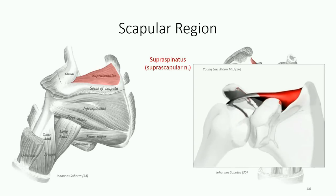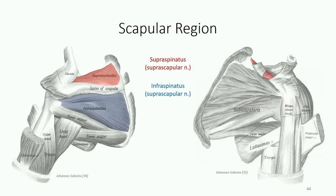Inferior to the spine of the scapula is the infraspinatus muscle. This muscle also inserts on the greater tubercle, but because it passes posterior to the joint capsule, it is considered a true external rotator of the shoulder. The third muscle of the rotator cuff is teres minor — a small, rounded muscle. Note that the term teres is Latin for round. It blends quite discreetly with the infraspinatus muscle and also serves as a lateral rotator of the shoulder.